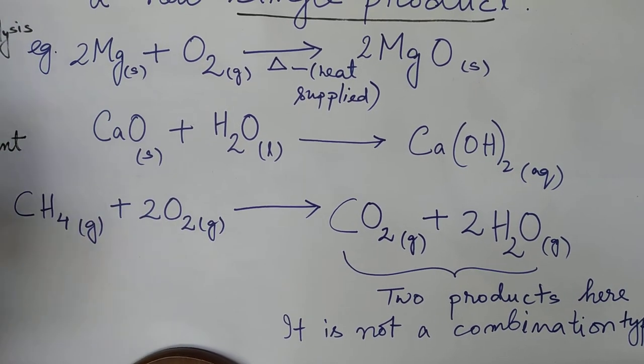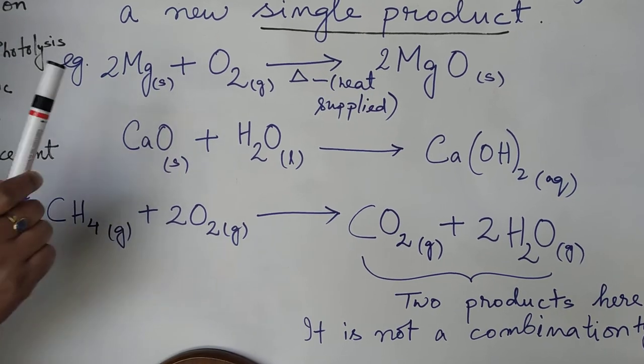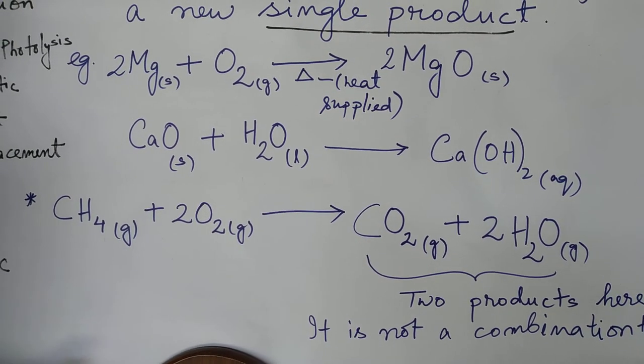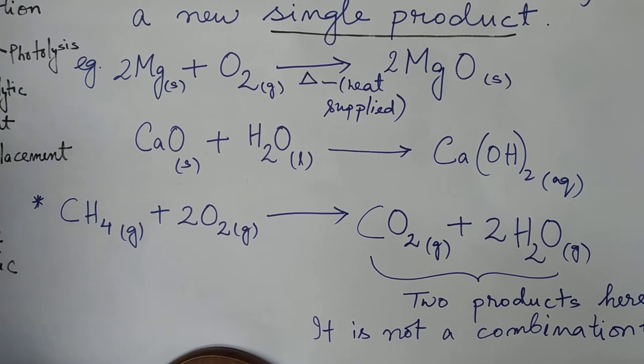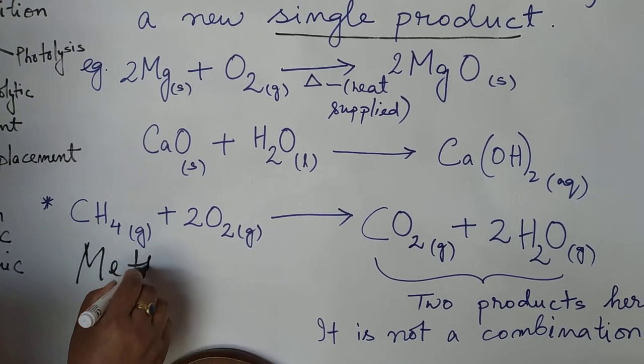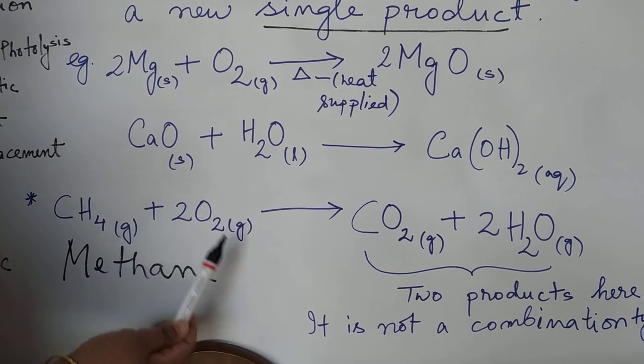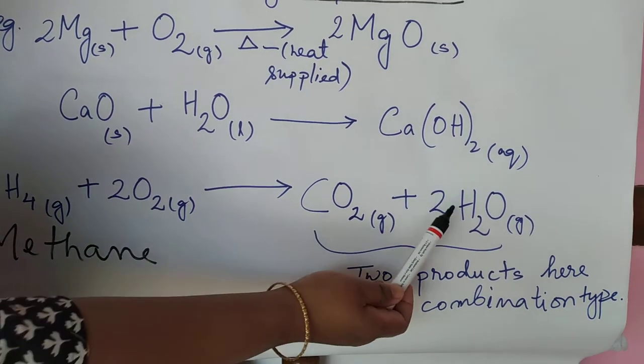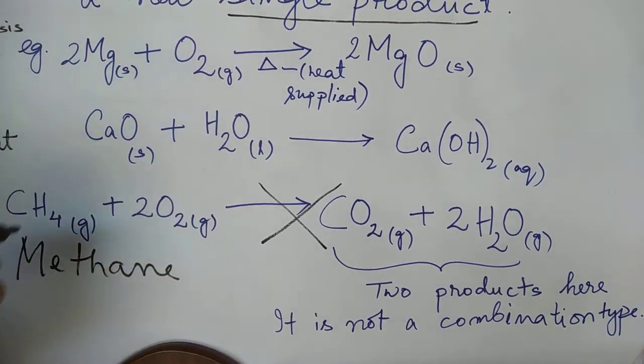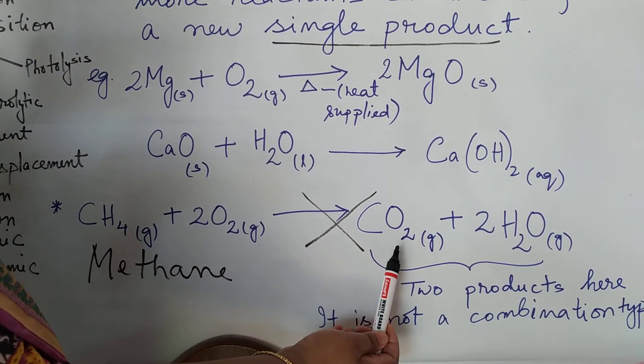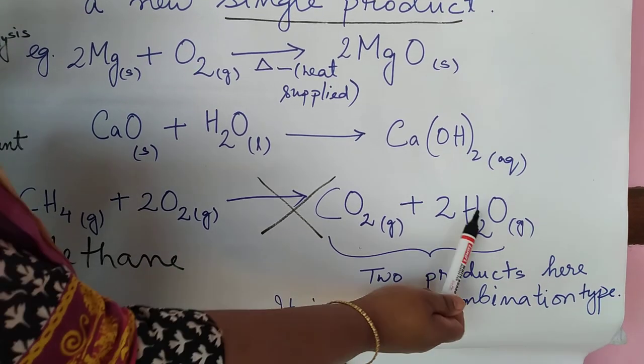And then I am giving you one more example so that you can easily distinguish a combination type of reaction and other different type of reaction. So here also methane, CH4 is called methane. This may be new to you. Methane, CH4, methane. So methane burns in air. That means they combine with oxygen to give carbon dioxide and water. So here, this is not a type of combination reaction. Why? Because here you got two products. What are the products? Carbon dioxide and water. So two products is formed.